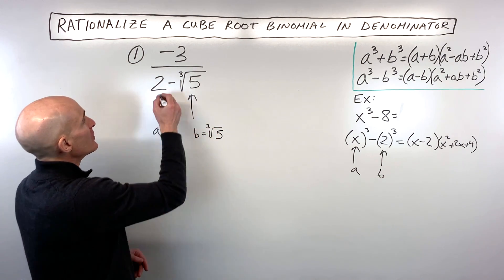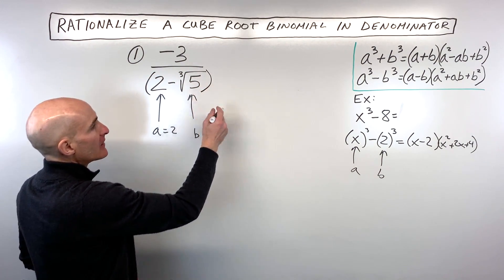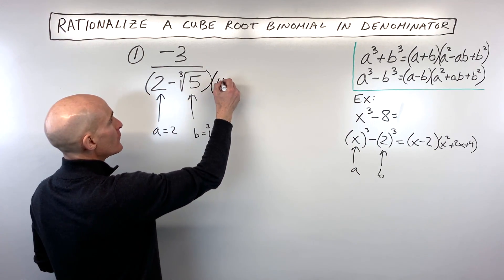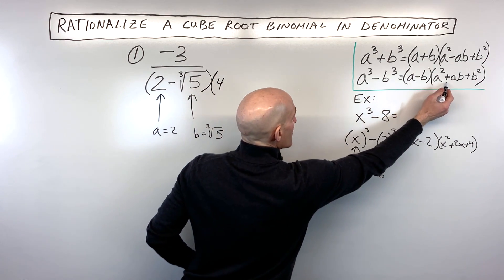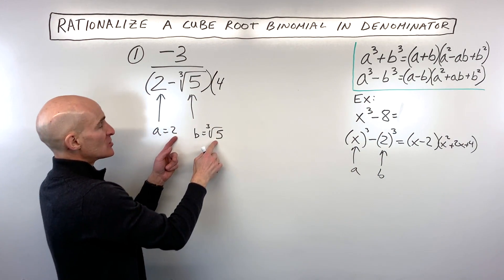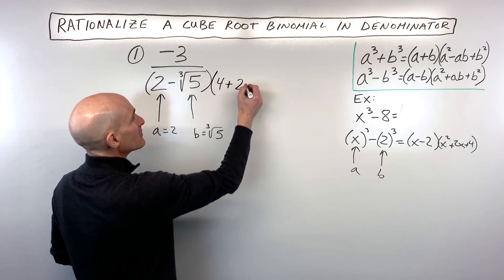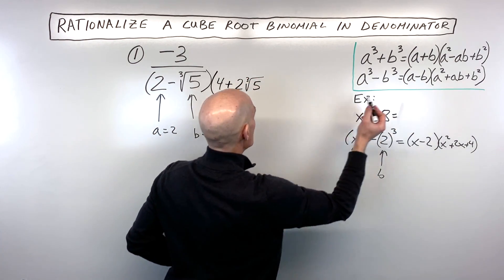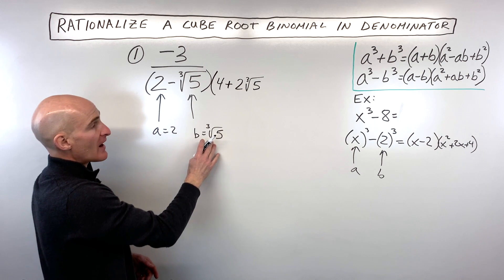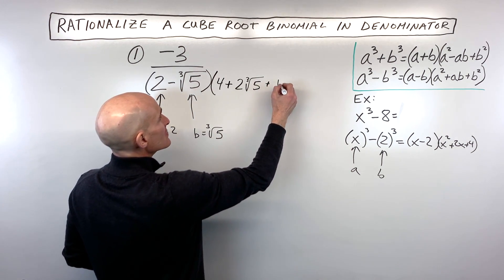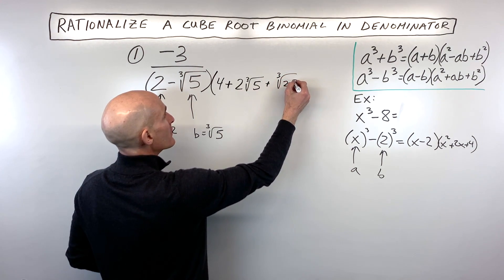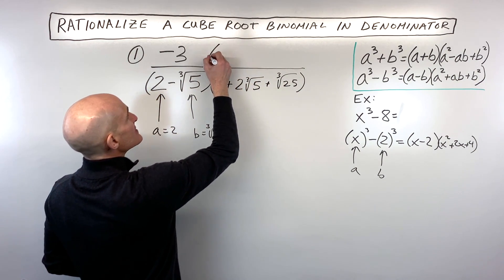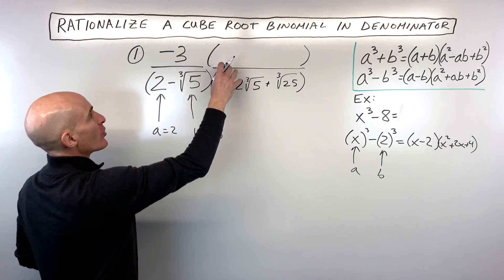And we think of the cube root of 5 as our b value. We're going to multiply by the trinomial: a squared is 4, plus a times b which is 2 times the cube root of 5, plus b squared which is the cube root of 5 squared, or the cube root of 25. Remember, whatever you do to the denominator, you have to do the same thing to the numerator, because this is like multiplying by one.